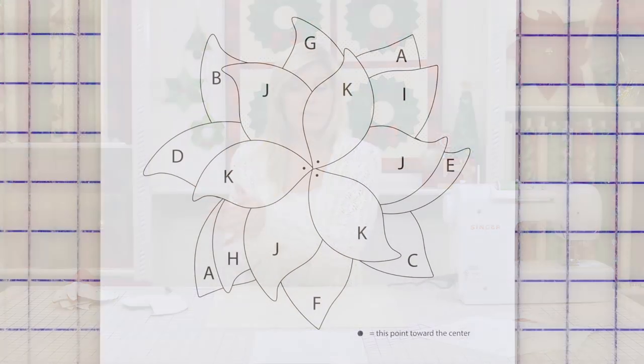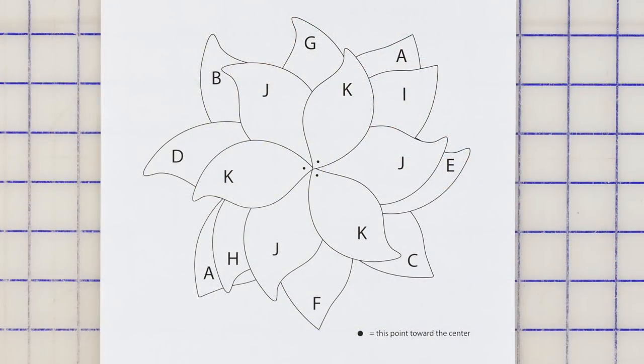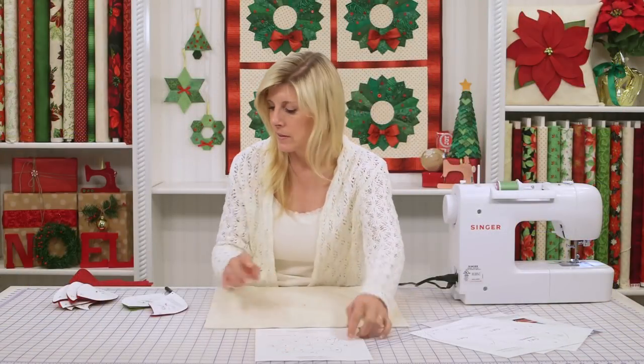Now this is where the diagram comes in. A to K. So you're going to start with your A pieces then move on to B, C, D, and all the way up through K. So it's very simple to follow. This is your layout diagram.